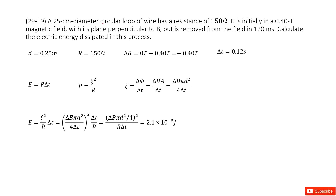So there we have a circular loop. This loop's diameter is given, and resistance is given. The magnetic field is perpendicular to this loop and it changes from 0.4 to 0. It is initially 0.4 and finally it is removed from the field, so that means it's 0. We can write down the change of magnetic field, and the time taken is given.